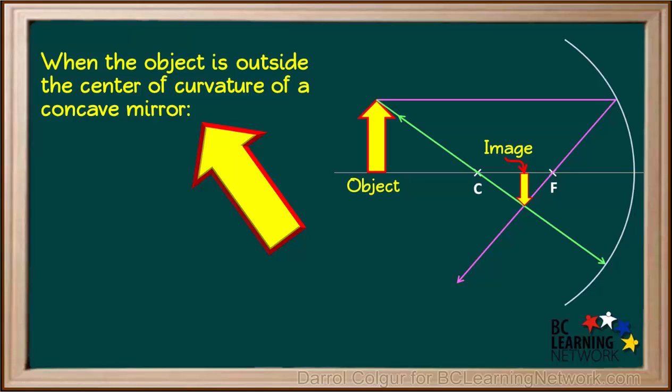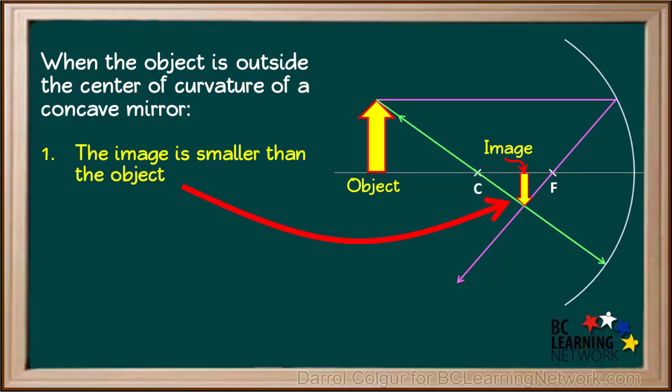We can use this diagram to summarize the characteristics of an image formed by a concave mirror when the object is outside the center of curvature C. You can see from the diagram that the image is smaller than the object. Also the image is upside down or inverted.